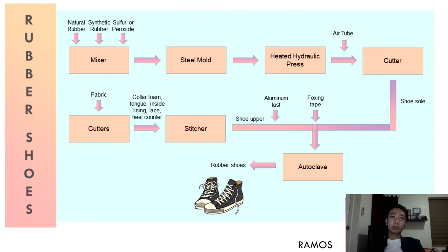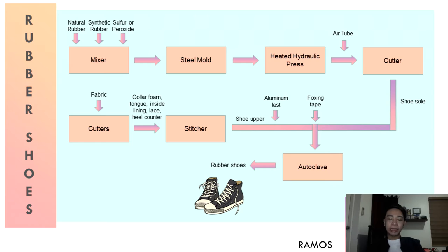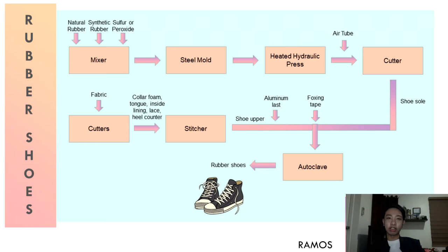Now for the production of rubber shoes or sneakers. Rubber shoes consist of two parts: the upper part, made of fabric, and the lower part or soles, made of rubber. In making the soles, natural rubber, synthetic rubber, and curing agents such as sulfur or peroxide are mixed. This mixture is placed into a steel mold and sent into a heated hydraulic press. Afterwards, excess rubber is cut to form a perfectly shaped sole. The shoe upper fabric is placed into cutters that shape the different parts of the shoe, such as the collar foam, tongue, inside lining, and heel counter.